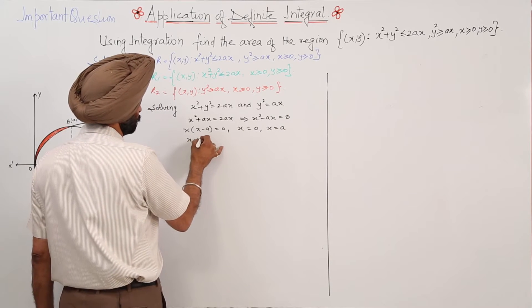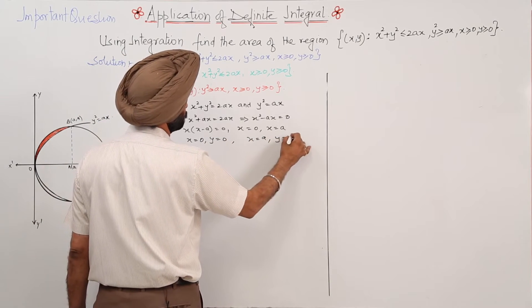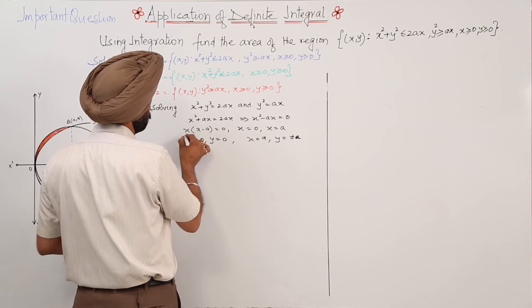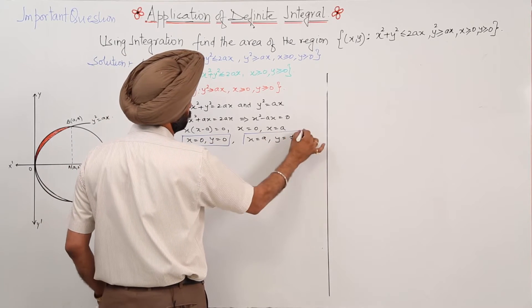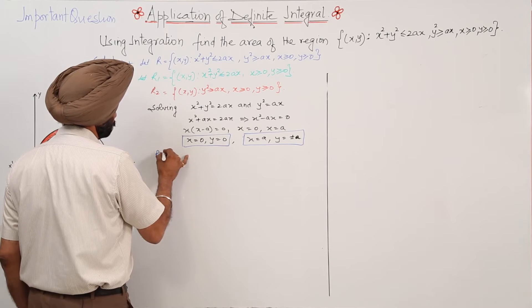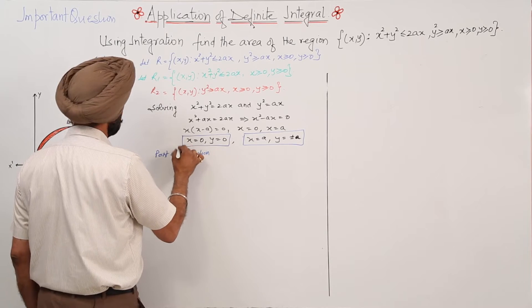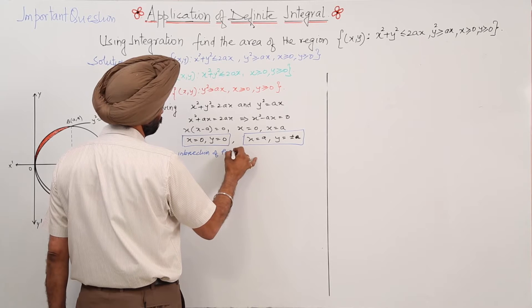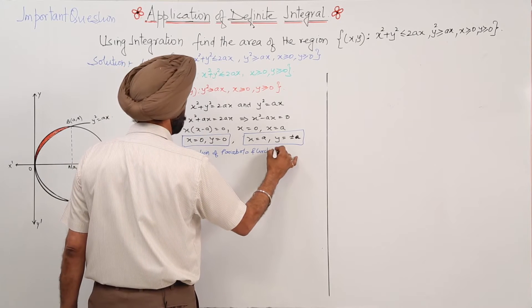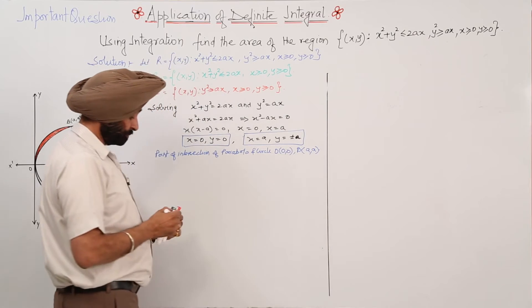When x = 0, y = 0. When x = a, y = ±a. So the points of intersection of the parabola and circle are the origin (0,0) and the point (a, a).